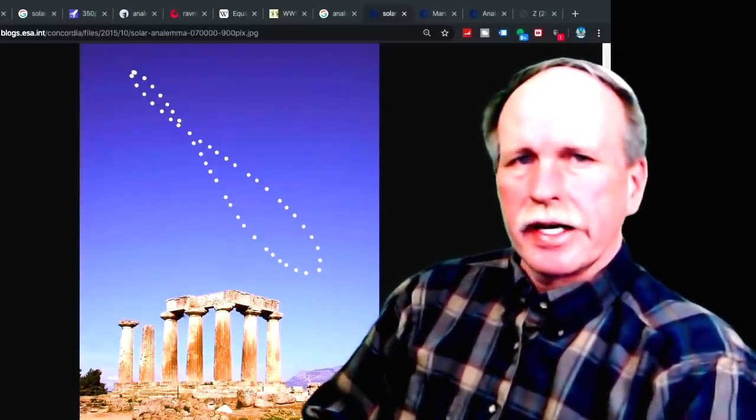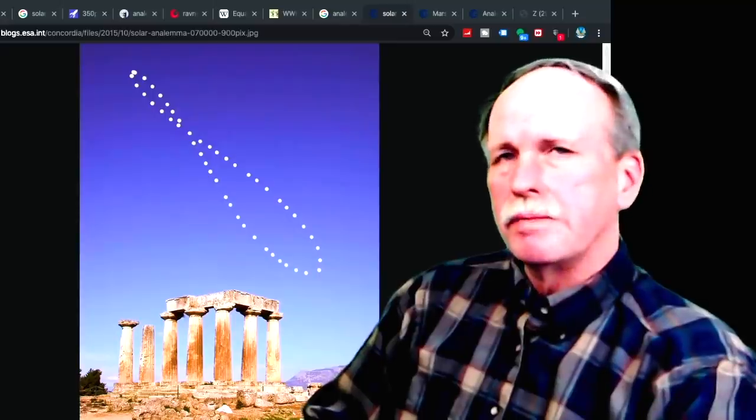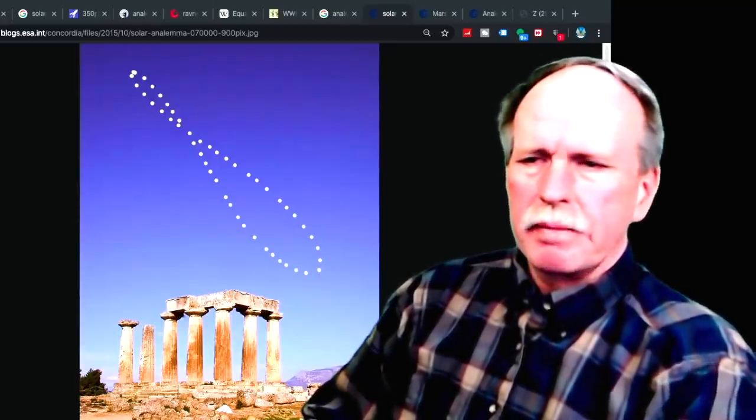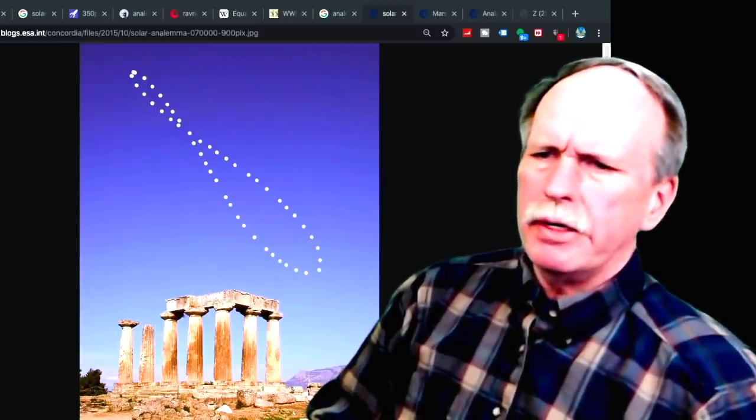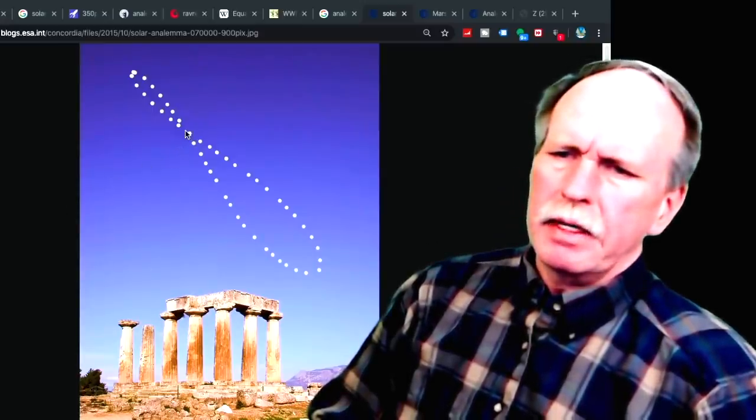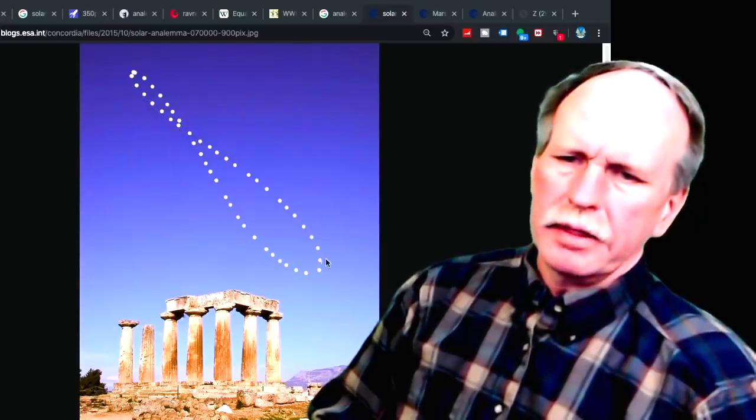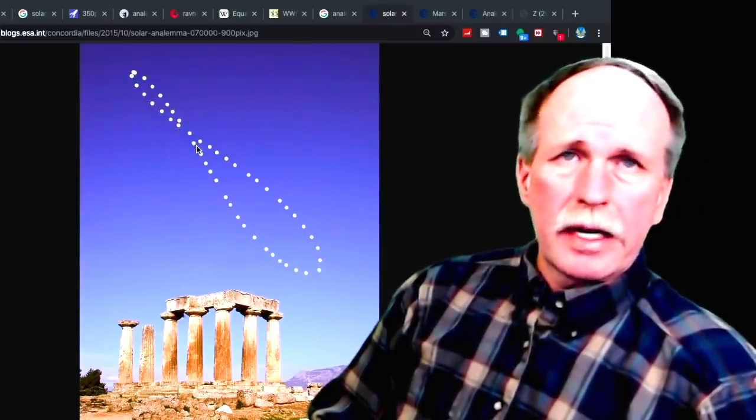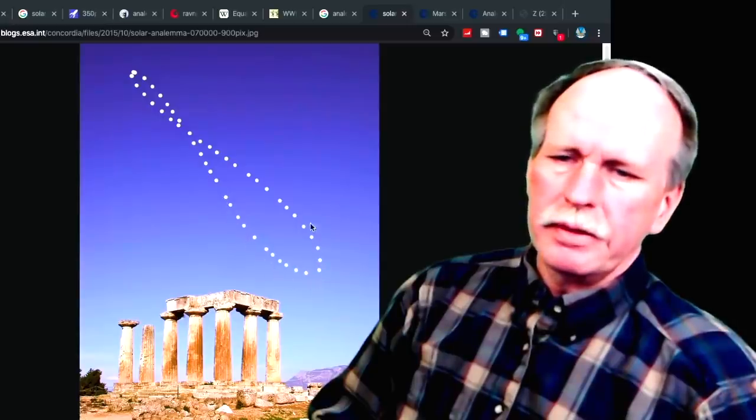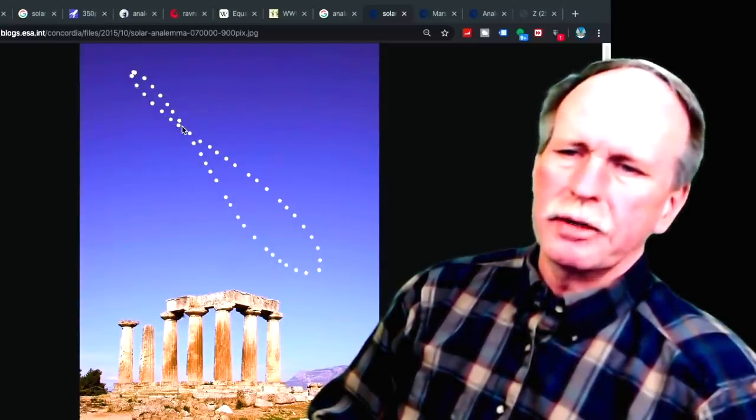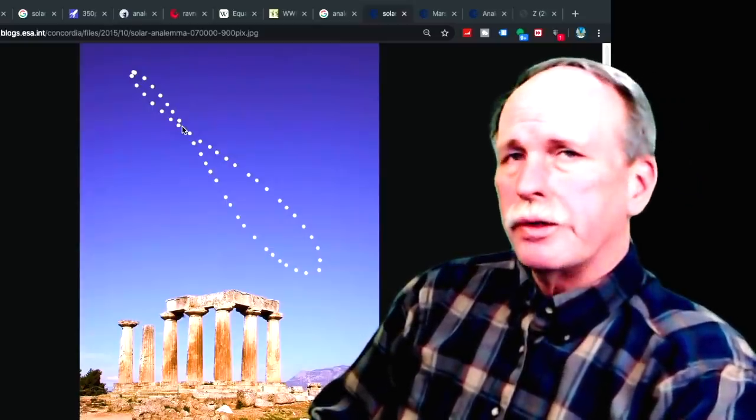Where is this picture taken? Well, I see some columns there. It's probably Greece or Rome. That's in the northern hemisphere. But more importantly, if we look at the solar analemma, we notice that the top loop is smaller than the bottom loop. As you recall, the big loop is on the southern end, and the small loop is on the northern end. So we're in the northern hemisphere.